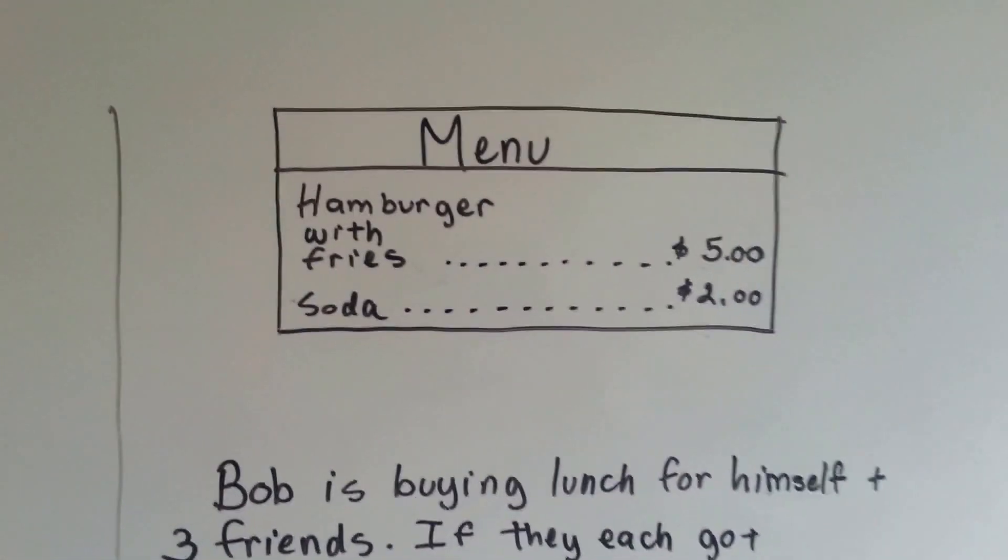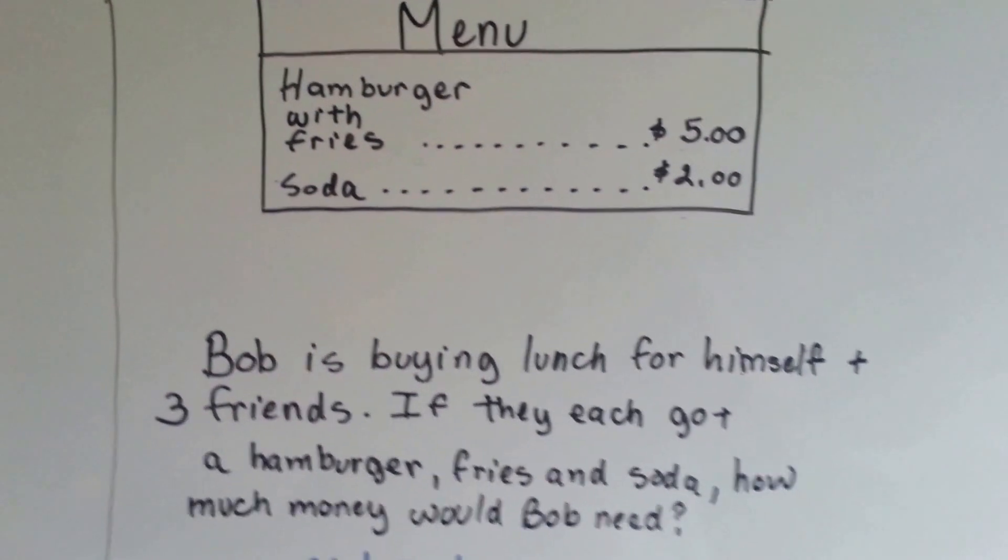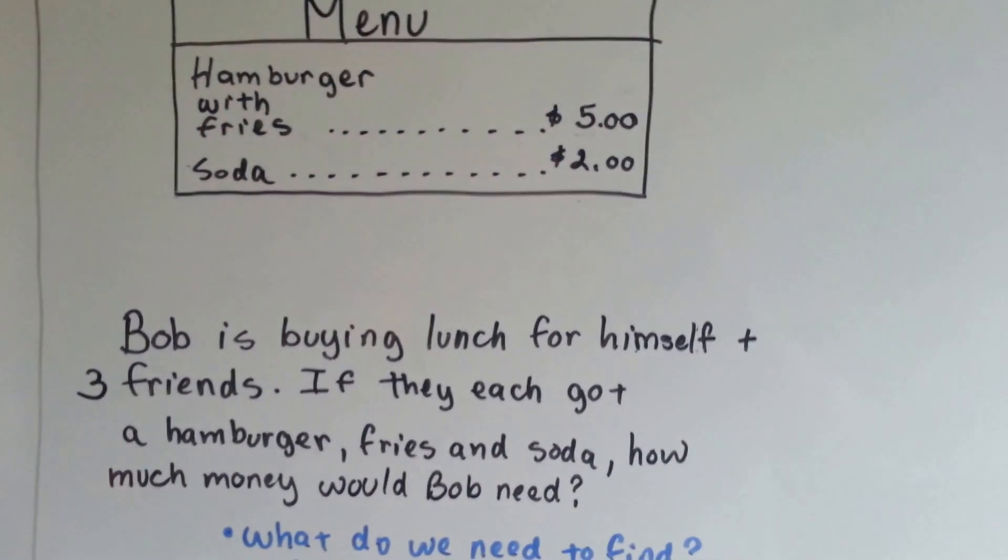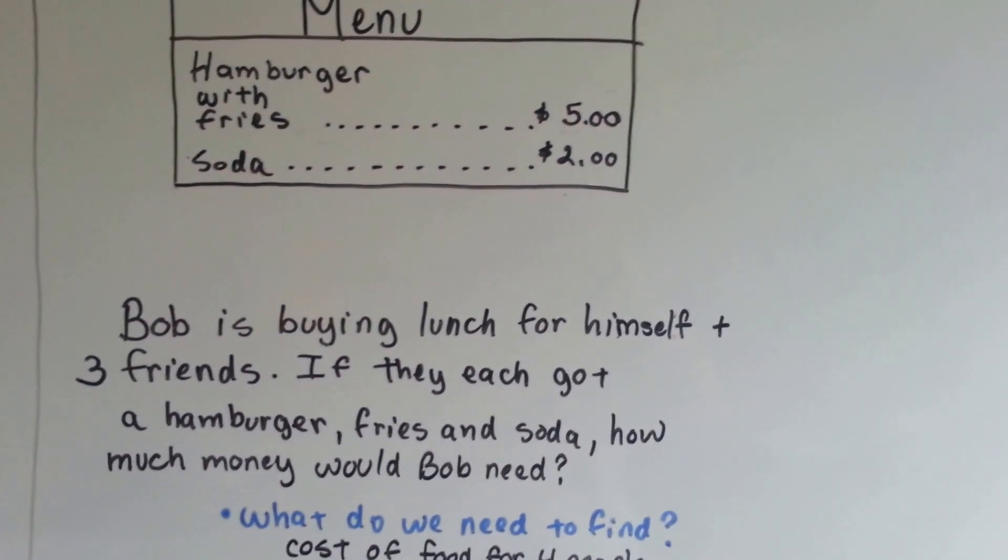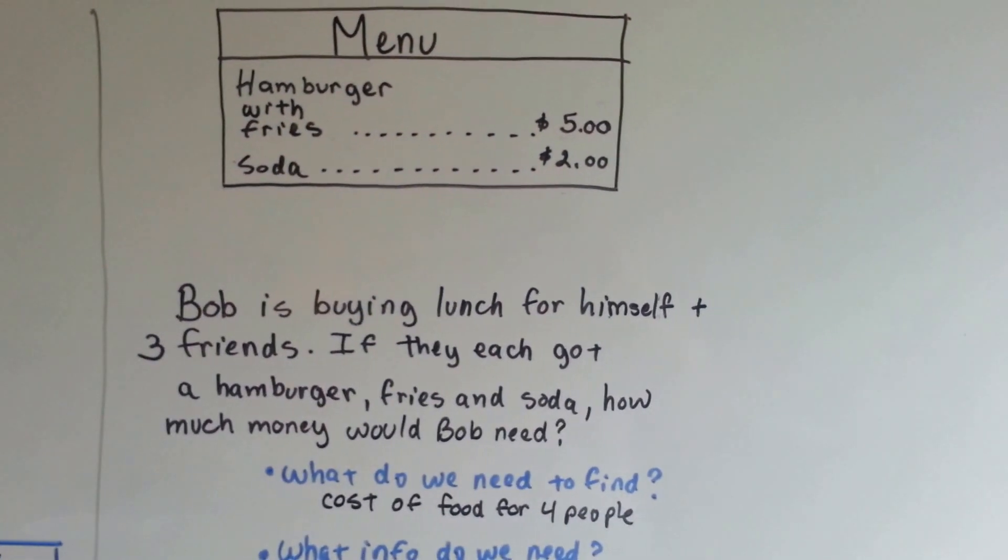Alright, here's a menu. A hamburger with fries is five dollars and a soda is two. Bob is buying lunch for himself plus three friends. If they each got a hamburger, fry, and soda, how much money would Bob need?